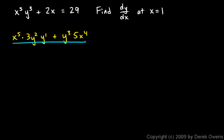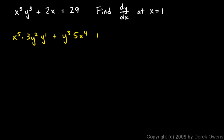So that is the derivative of x to the fifth y cubed. Now we need the derivative of 2x with respect to x, which is just 2. And the derivative of the right side is 0.